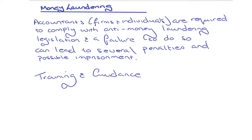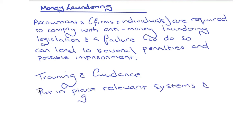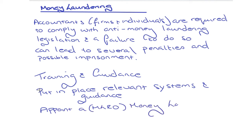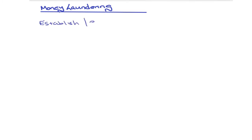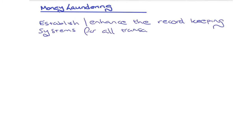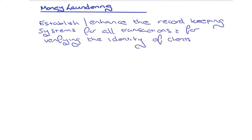Apart from training and guidance, accountants can put in place systems, controls, and procedures to ensure that firms are not used for money laundering purposes. As responsibility rests with senior management, firms can also appoint a Money Laundering Reporting Officer (MLRO), who is responsible for receiving and evaluating reports of suspected money laundering from colleagues within the firm.